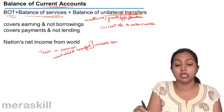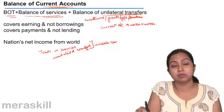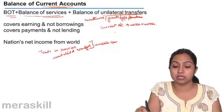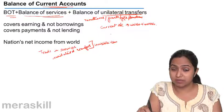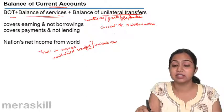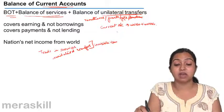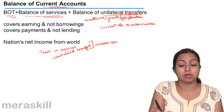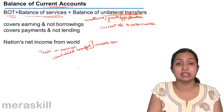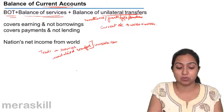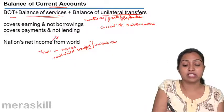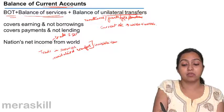So in the balance of current account, you include all three things: balance of trade, balance of services, and balance of unilateral transfers. Balance of trade is called visible earnings, and balance of services and balance of unilateral transfers are called invisible items. The current account does not cover borrowings and does not cover lending — it just covers trading in goods, services, and transfers. It tells us about a nation's net income in terms of trade and services from the rest of the world.